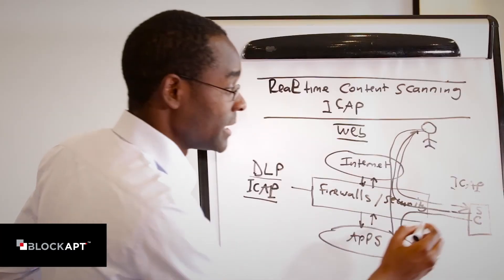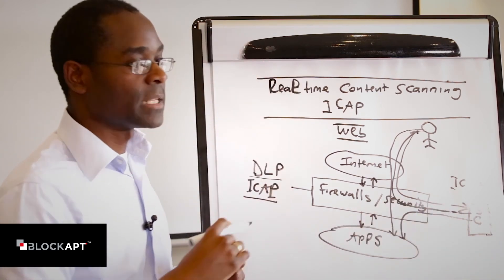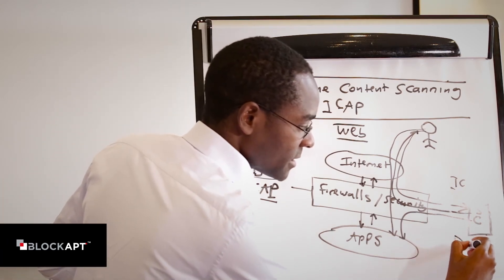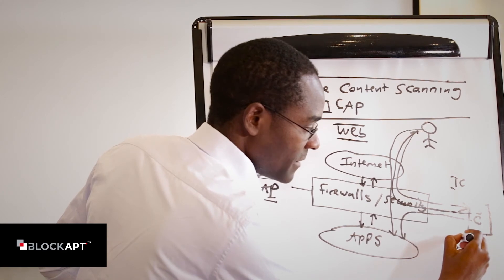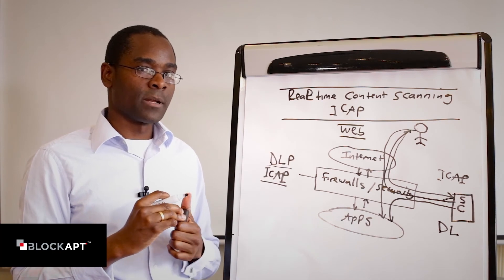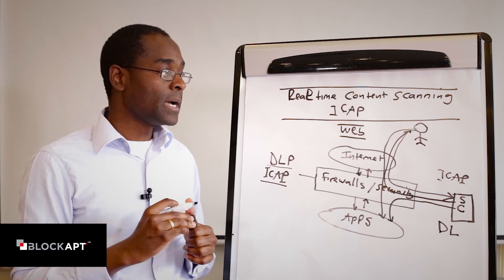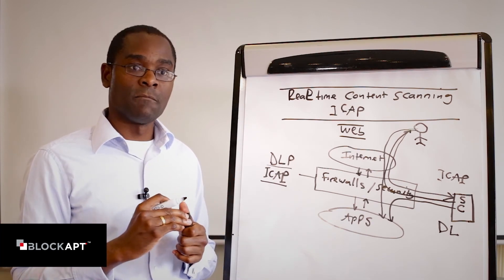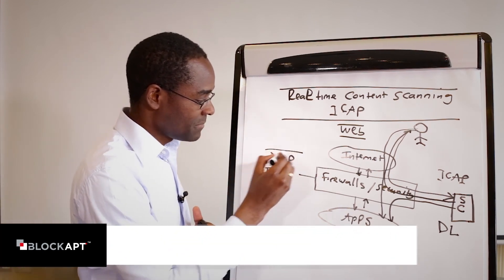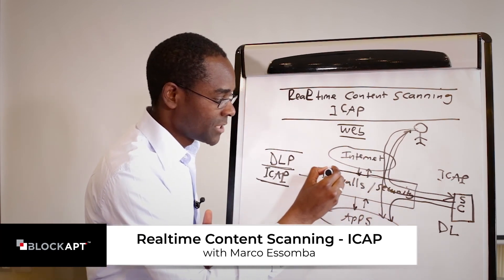You can see how our ICAP server could be doing a lot of real-time content scanning to make sure companies are protecting against data leakage — information leaving the company in an unauthorised manner. This is fairly fundamental to people worried about sensitive company information being stolen or malicious information being sent inside the company. So think DLP and think ICAP to integrate within your existing network infrastructure.